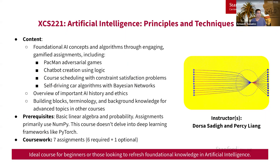Starting with XCS 221, this is a foundational AI concepts and algorithms course. We teach it through gamified assignments, so you'll be building things like Pac-Man, chatbots, scheduling, and self-driving car algorithms, just to name a few. You'll go over the history of AI and ethics and learn the basic building blocks and terminology you'll need to be successful in other courses. This course assumes some basic linear algebra and probability. Assignments primarily use NumPy and do not dive into deep learning, so you won't be using PyTorch. There are a total of seven assignments — six required and one optional — making it an ideal course for beginners looking to refresh foundational AI knowledge.